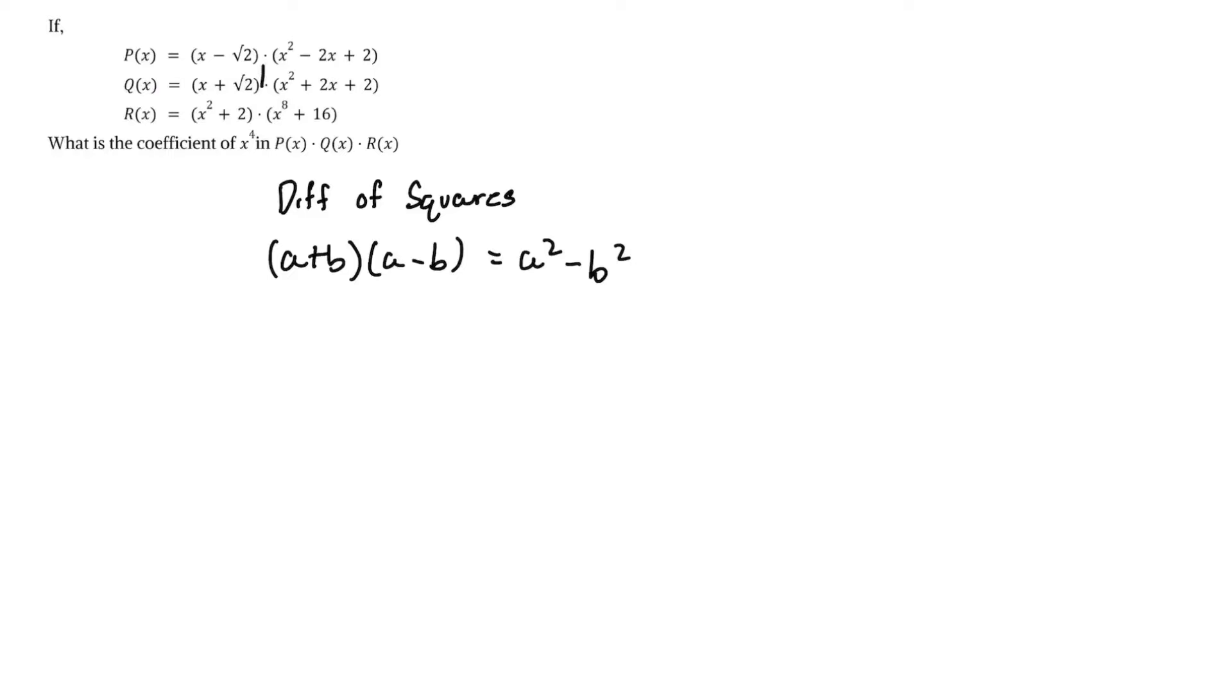Yep, it is the (x - √2) in P(x) and the (x + √2) in Q(x). When we multiply these together according to our formula, we get x² - 2.